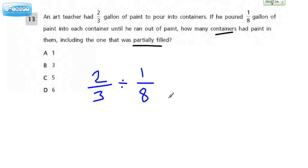All right, if we go ahead and do the algorithm for this, keep, change, flip. We're going to keep the two-thirds. We're going to change this to multiplication. And this, we're going to multiply by the reciprocal of the divisor, which would be eight over one.